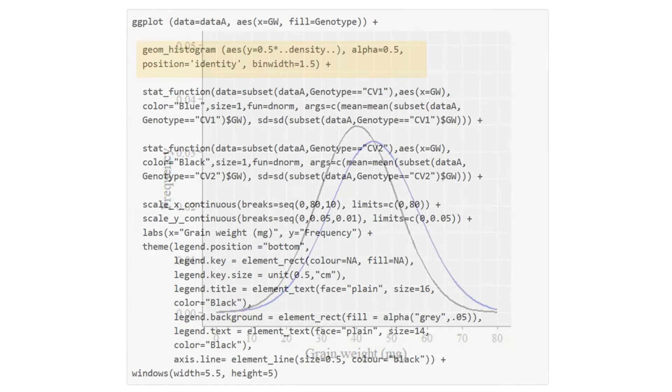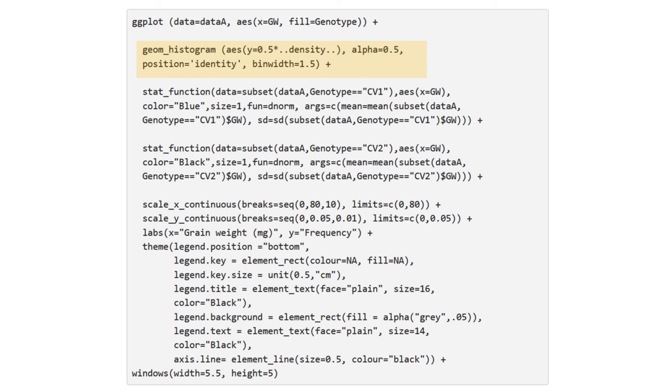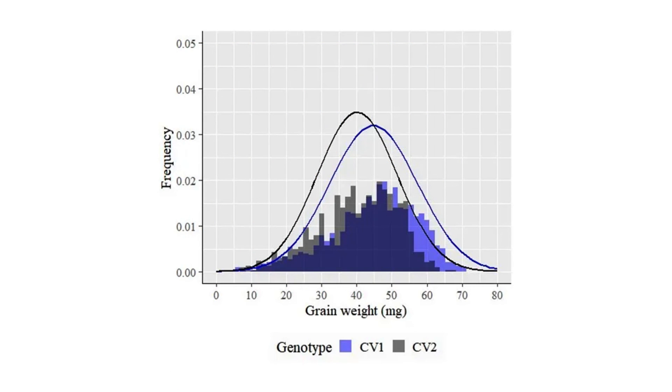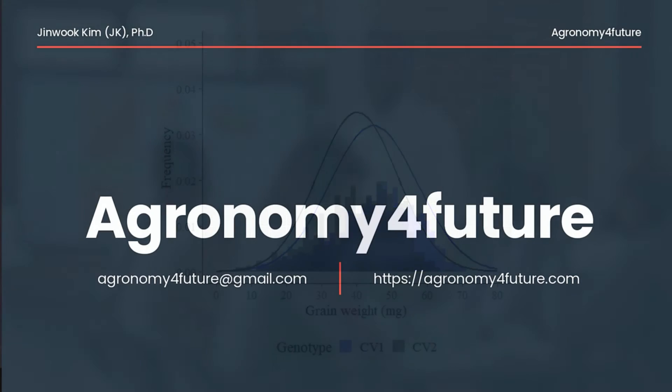Here is one more tip: we can add histogram and normal distribution graph by adding a simple code like this. Please visit agronomyforfuture.com and copy and paste the R codes I provided and practice in your R console. Thank you.